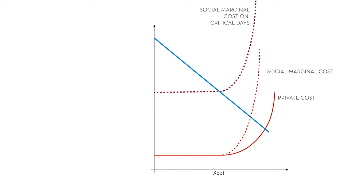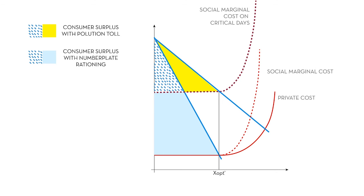Let's compare that to the optimal solution. The two shaded areas, the blue and yellow, are the consumer surplus with the pollution toll. If we implement number plate rationing, then only half of the cars will be allowed to drive, so the demand curve shifts inward, being more steep. Now, the consumer surplus will be the two blue shaded areas.